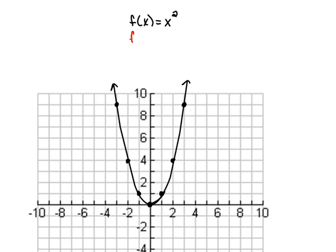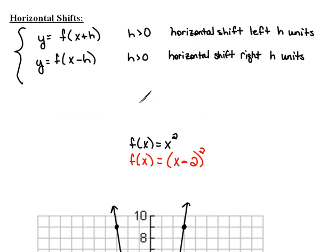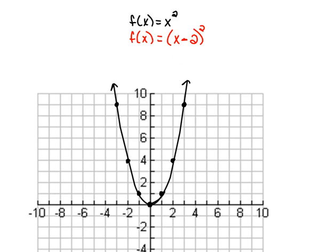What I want to do now is I want to create the graph of f of x equals x minus 2 squared. Now, here I am subtracting a positive number. So, according to our definition here, when we're subtracting off a number, we should get a horizontal shift right that many units. What this does to the graph is it just takes each one of these points along this curve and it moves it over two units.